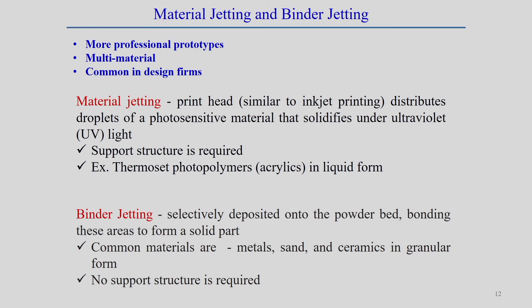Material jetting and binder jetting processes can produce more professional prototypes and can handle multi-material and multi-color materials, though they are mainly associated with polymeric materials. In material jetting, a print head similar to an inkjet printer distributes droplets of a photosensitive material that solidifies under ultraviolet rays. A support structure is required in this process since the droplets need to be cured by UV light after deposition.